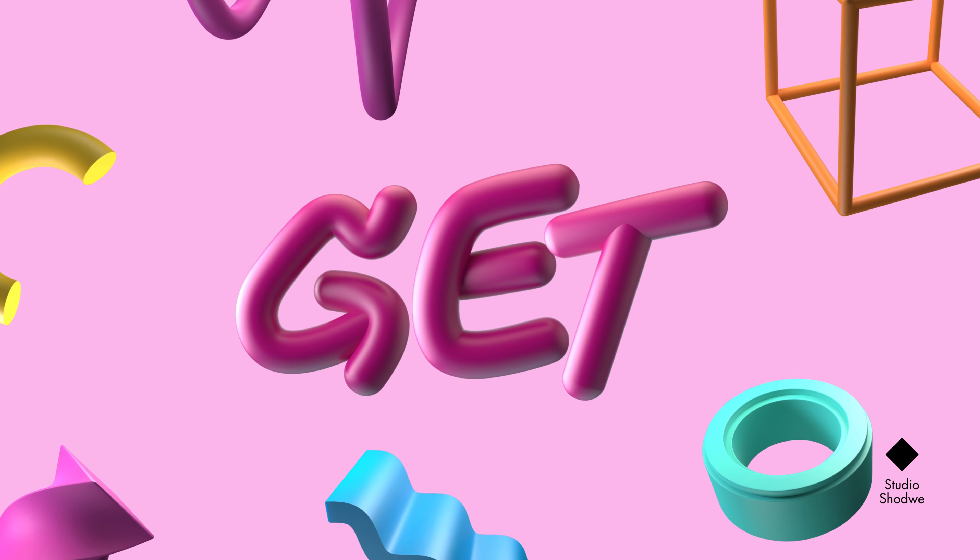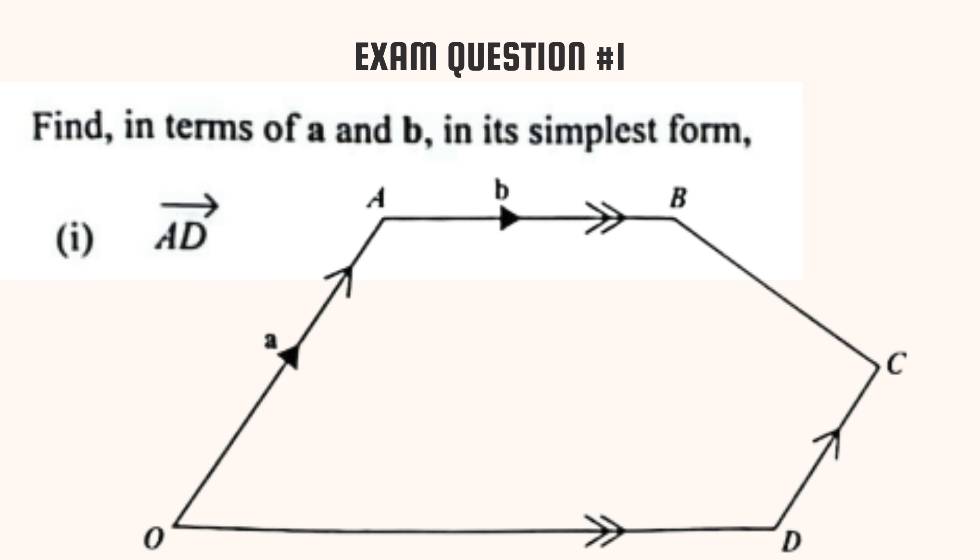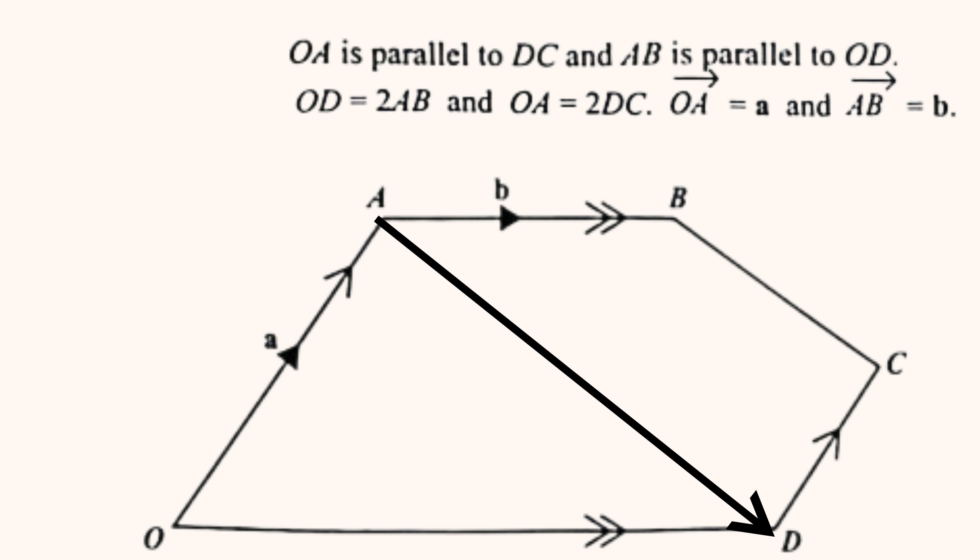Let's look at a few exam questions. In part one of the first question, we are asked to find the vector AD in terms of a and b. Take note of the information given.